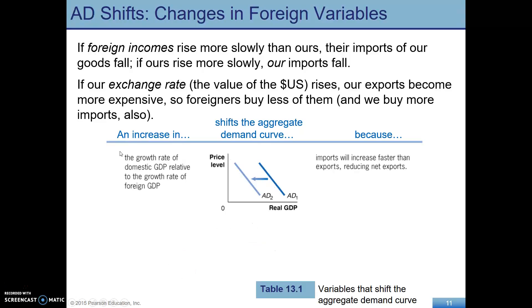If foreigners become worse off relative to us — their incomes rise more slowly — that's going to affect our exports. They can't buy as many U.S. goods, so our exports fall. And because we're wealthy relative to other countries, our imports rise. So exports smaller, imports bigger, net exports falls — that's the AD curve shifting to the left.